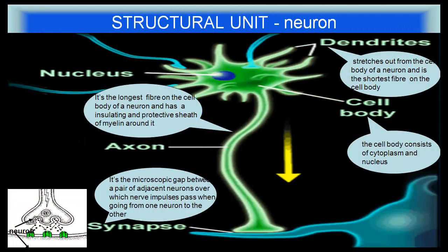This is the structure of a neuron. It has a cell body consisting of cytoplasm and nucleus. Dendrites stretch out from the cell body and are the shortest fibers on the cell body. The axon is the longest fiber on the cell body and has an insulating and protective sheath of myelin around it. A synapse is the microscopic gap between a pair of adjacent neurons over which nerve impulses pass from one neuron to the other.